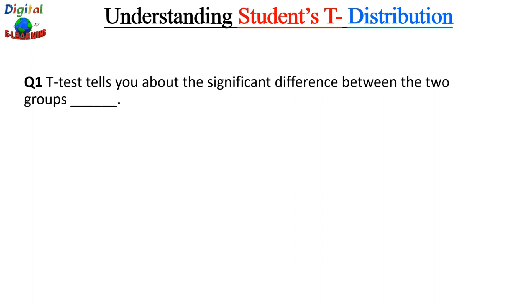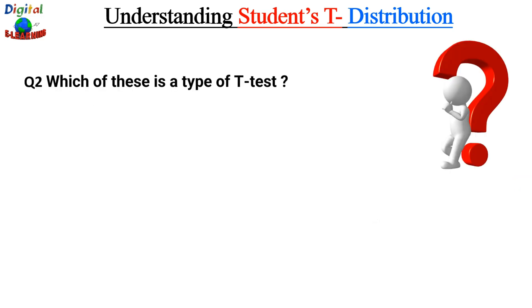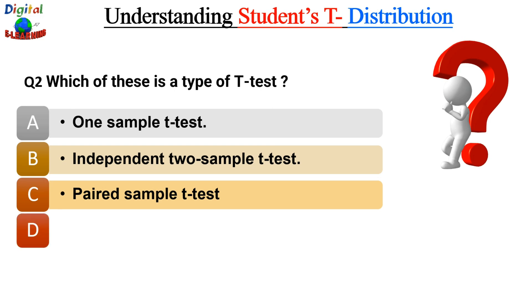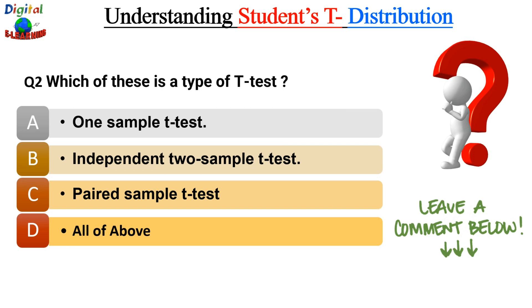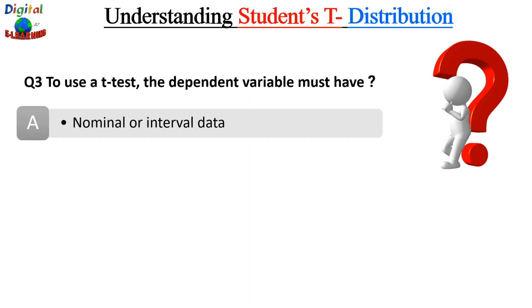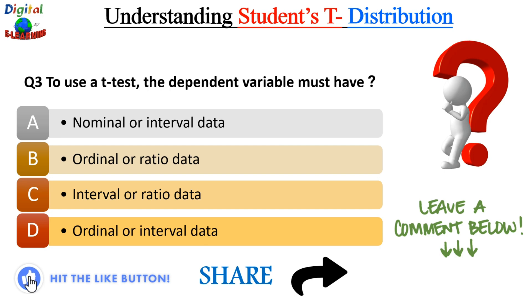Quick knowledge check: Question 1 — 'The t-test tells you about the significant difference between two groups' — is this true, false, or can't be determined? Question 2 — Which of the following is a type of t-test: one-sample t-test, independent two-sample t-test, paired t-test, or all of the above? Question 3 — To use a t-test, the independent variable must have: nominal or interval data, ordinal or ratio data, interval or ratio data, or ordinal or interval data? Leave your answers in the comments below. If you liked this video, please give a thumbs up and share it with your friends and colleagues.